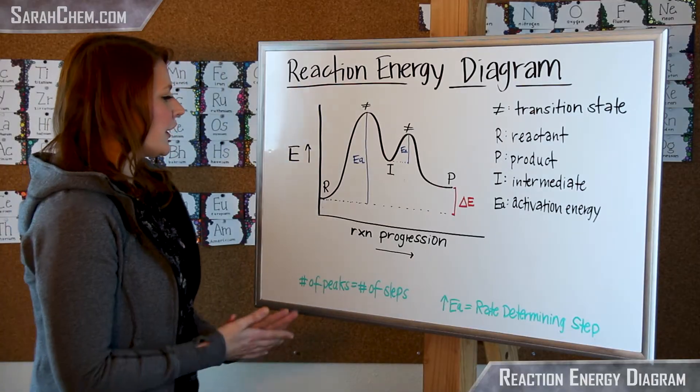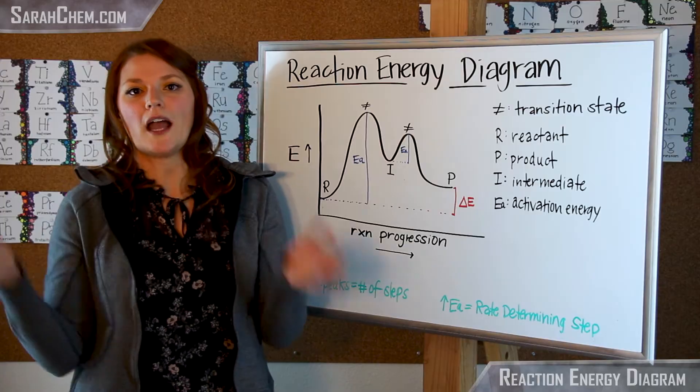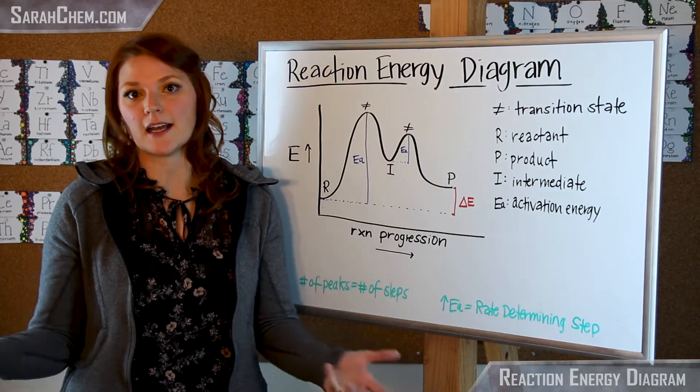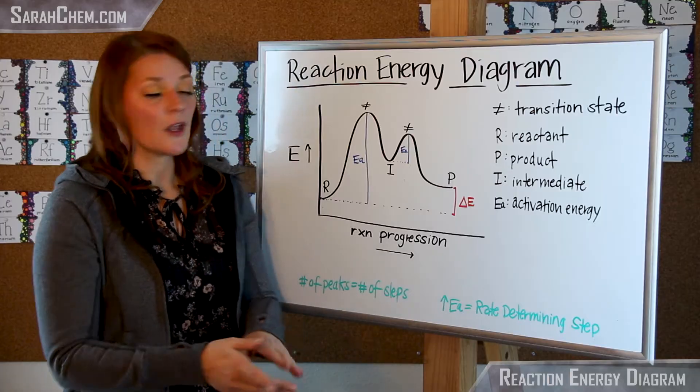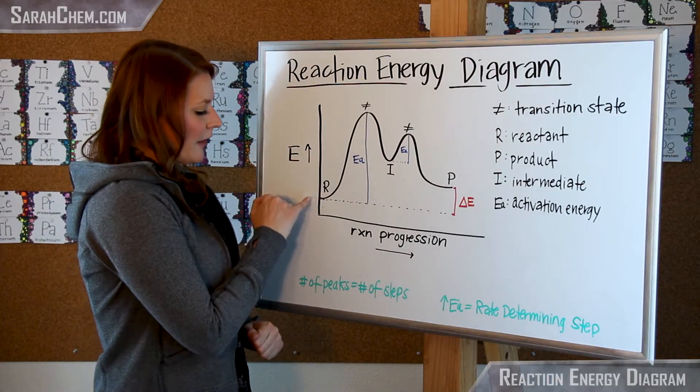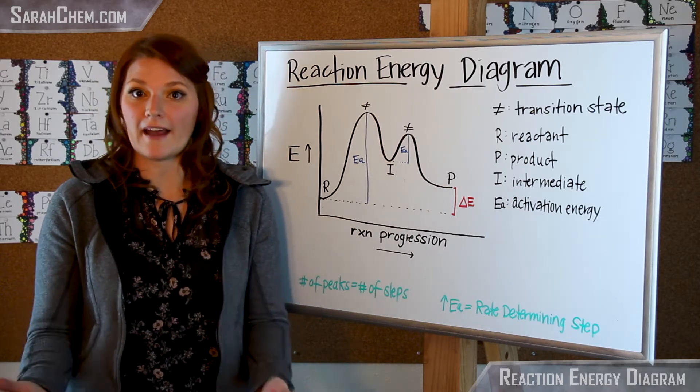If we take a look at it over here, we see that this axis represents energy and this is generically called reaction progress, sometimes it'll say time, but that's just an idea of the reaction moving forward. Over here we have R, which stands for our reactant, and where this line is tells us about the energy of the reactants that we have.